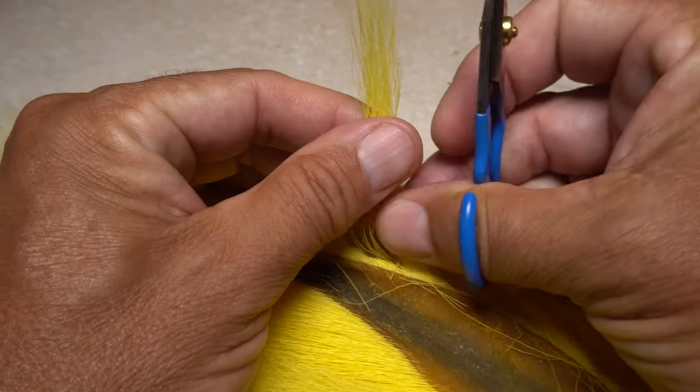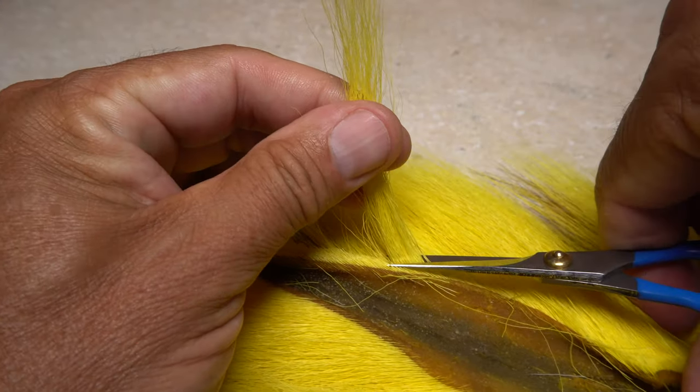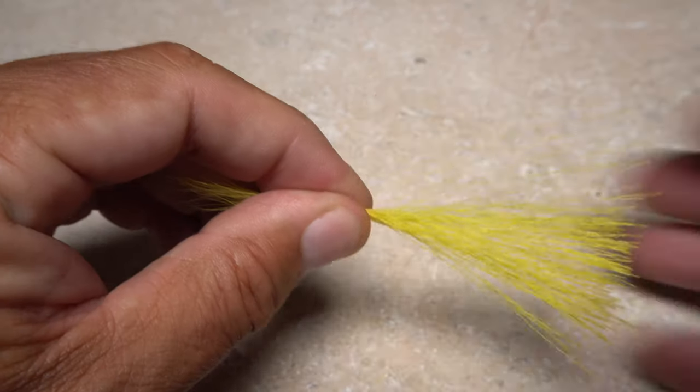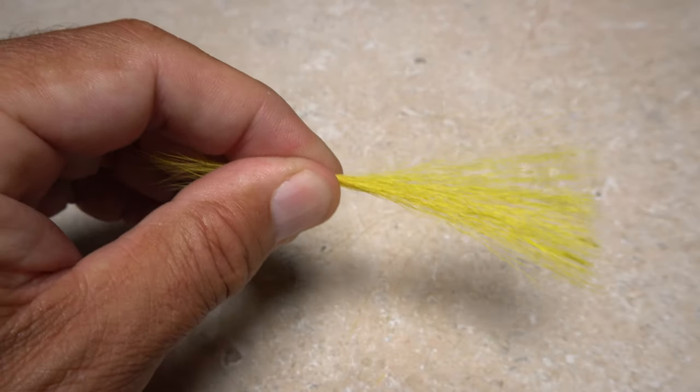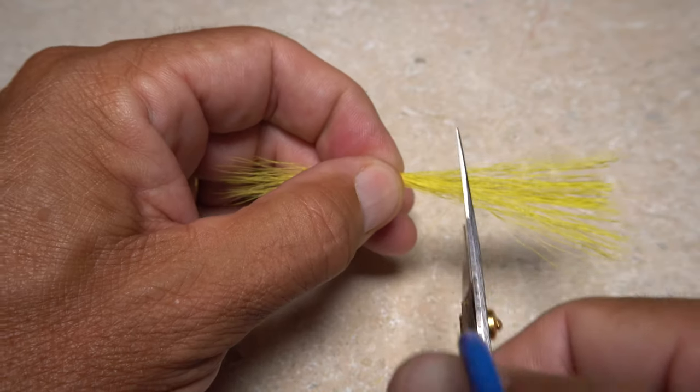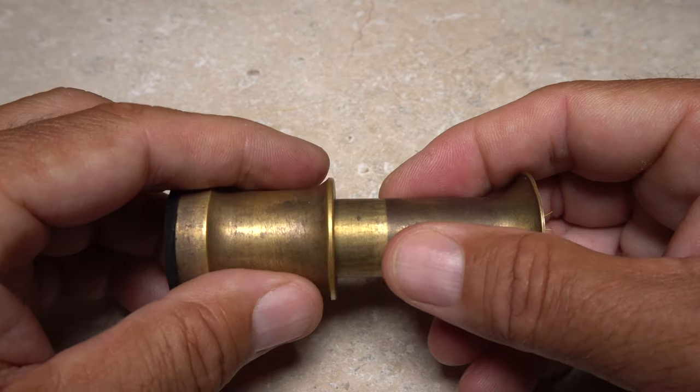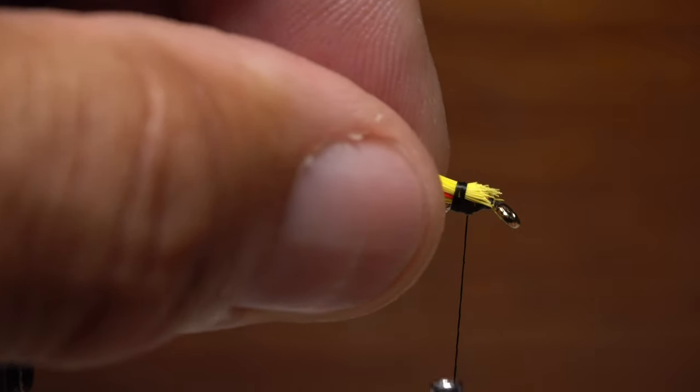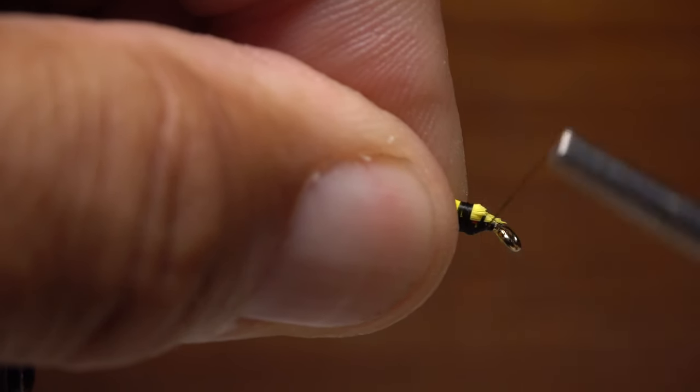The top part of the wing is also yellow bucktail. Snip a slightly larger clump free from the hide, clean out the lower short hairs and longer ones from the tips, trim the butt ends off square, stack to align the tips, and complete the same tie-in and trim procedure as before.